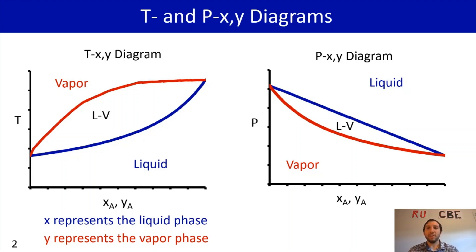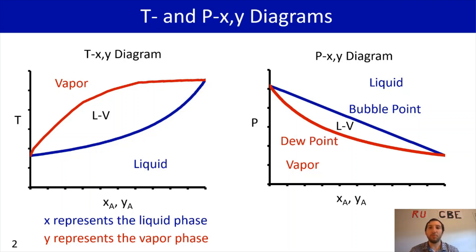As a reminder connecting what we talked about in part one, that straight line is your bubble point line. So that indicates that whatever composition you have, that's going to indicate the pressure at which you're going to form your first bubble. And similarly, the red curve is your dew point curve, which indicates when you're going to form your first liquid droplet.